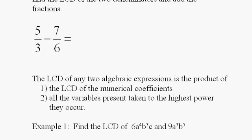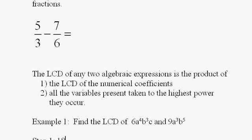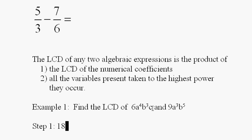Step one would be to find the lowest common denominator of the two numerical coefficients. And of course the common denominator of six and nine, or least common multiple, is 18. This is the lowest number for which this will divide into evenly without remainder and this will divide into evenly without remainder.